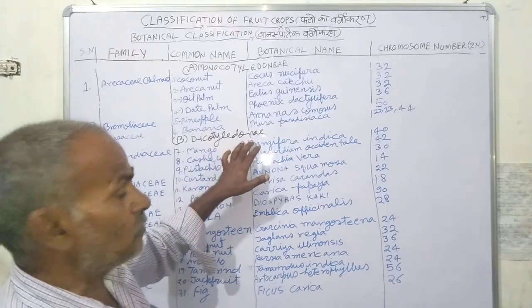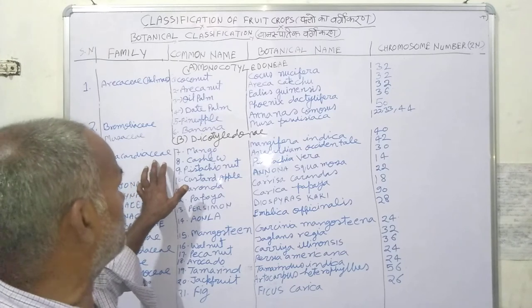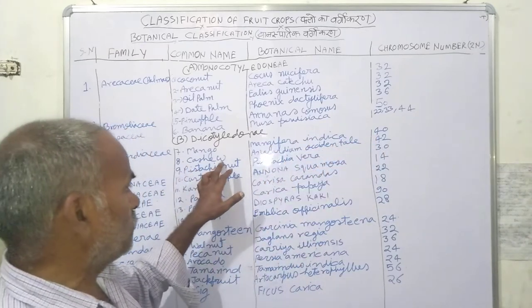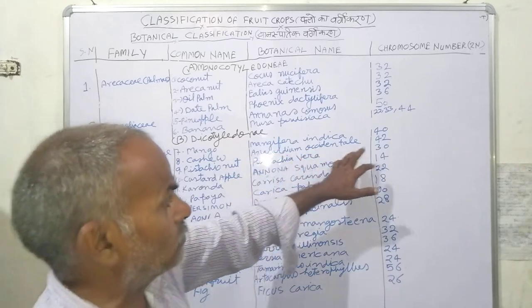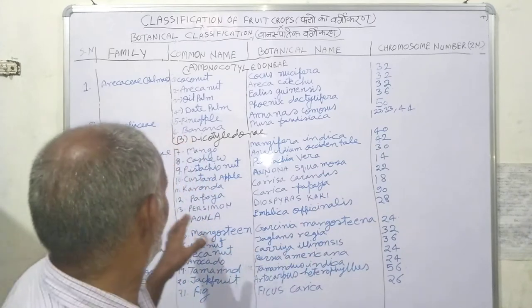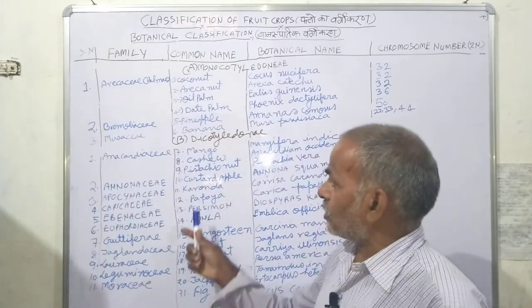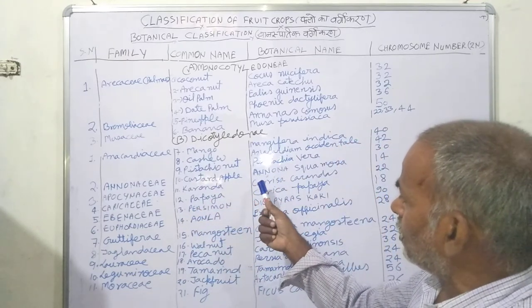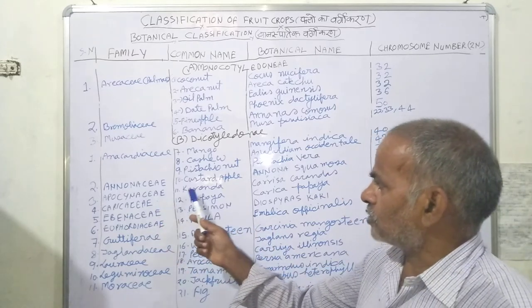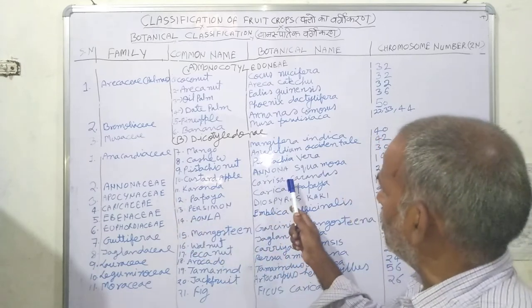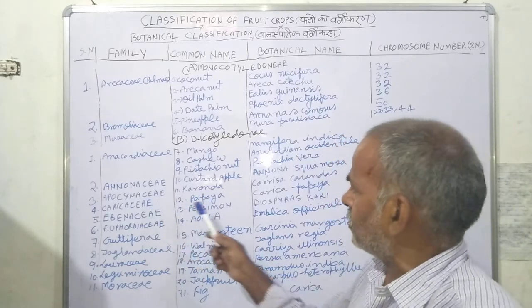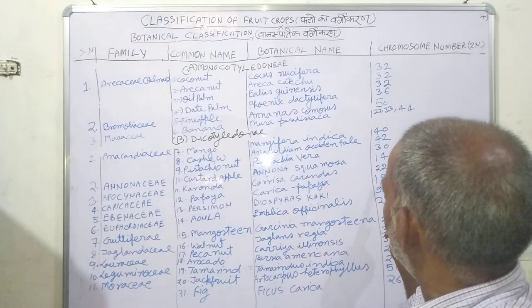This is a very important family. The botanical name for cashew is Anacardium occidentale, and its chromosome number is 18.